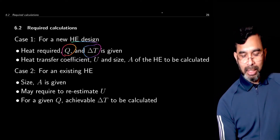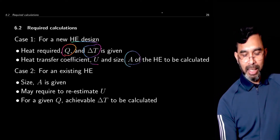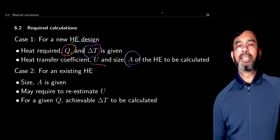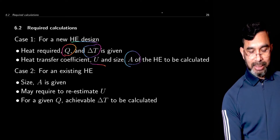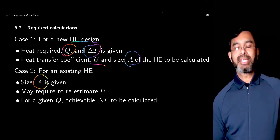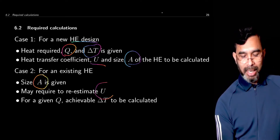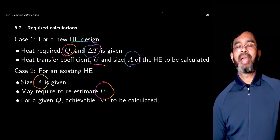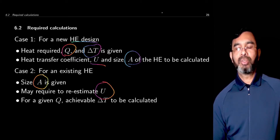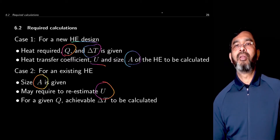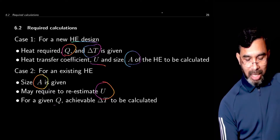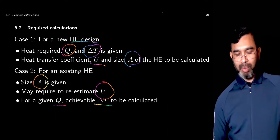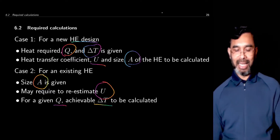For a new design, we need to determine the size of the heat exchanger and the resulting overall heat transfer coefficient. For an existing heat exchanger, the size is given, so we may need to re-estimate the overall heat transfer coefficient. This may happen because there may be significant fouling, and we need to determine whether the extent of fouling is acceptable or whether we need to clean the heat exchanger. So for a given Q, we may need to calculate the achievable delta T.